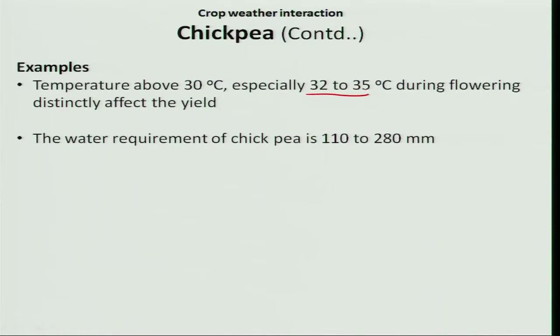The water requirement of chickpea is determined by stored soil moisture; therefore, the water requirement is very minimum — around 110 to 280 mm. This concludes the crop weather interaction for sugar beet and chickpea. In the next class, we will see the crop weather interaction for sunflower and mustard. Thank you.